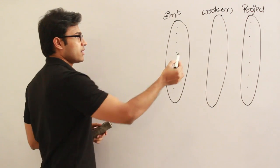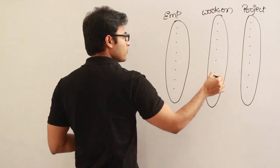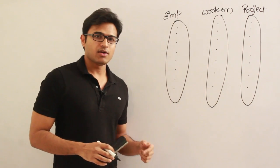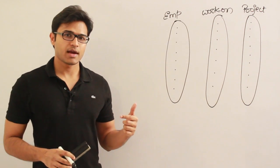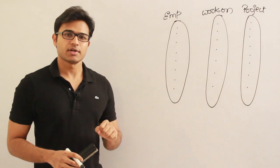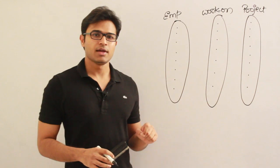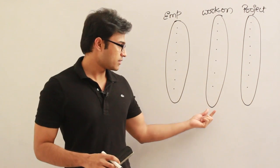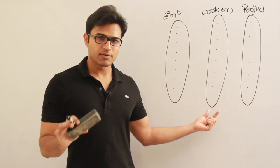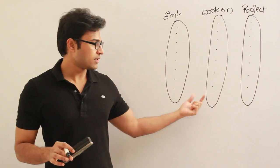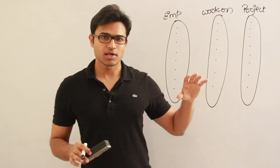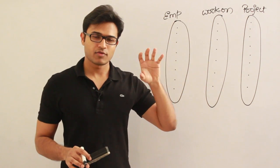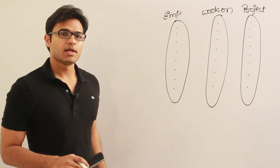Now I have to take each relationship and associate it with one entity from the employee set and one from the project set. In some sense, you can think of it like a cross product of the two sets — a relationship is nothing but a subset of the cross product, just like in mathematics and set theory. You take the Cartesian product of both sets to get all possible pairs, then take a subset of that — that becomes the relationship.